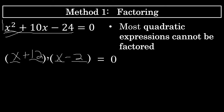I know that this is the correct factorization because x times x is x squared, 12 times negative 2 is negative 24 for the last term, and the middle term comes from x times negative 2, giving negative 2x, and 12 times x, giving positive 12x. Negative 2x plus 12x is positive 10x. These two binomials have a product of x squared plus 10x minus 24, so the factorization is correct.